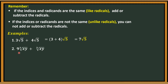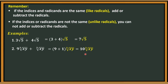Number 2: 9 cube root of xy plus cube root of xy. The index is the same and the radicand is the same. Therefore, we can combine them. Note that the second term has an implied coefficient of 1, so we compute 9 plus 1 and copy cube root of xy. Simplified: 10 cube root of xy.